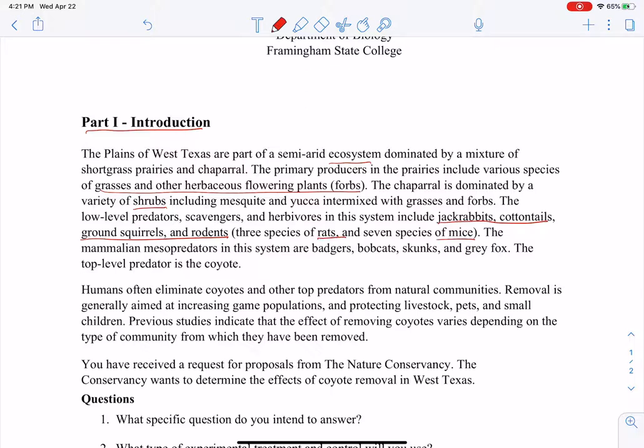The mammalian mesopredators or upper-level predators are badgers, bobcats, skunks, and gray fox. The top-level predator is the coyote, and if you remember, we have a name for that. We call them the apex predator.